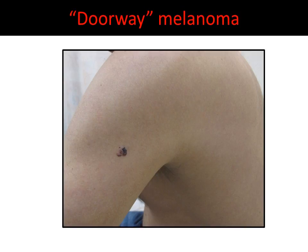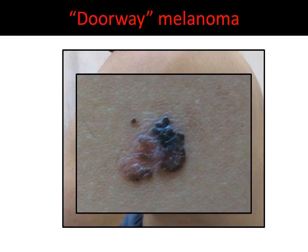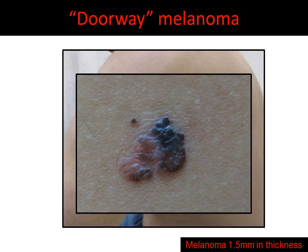Here's an example of a doorway melanoma. This young patient presents with a large plaque, multicolored, an obvious outlier on his skin. In close-up, we can look at the variegation in colors, the asymmetric shape, and multiple criteria from the ABCD criteria. This is a doorway melanoma, 1.5 mm in thickness.